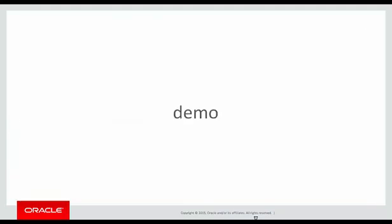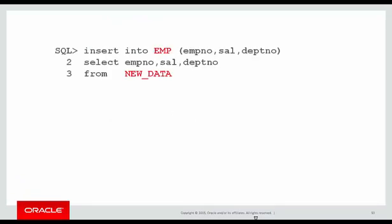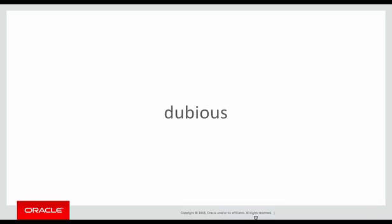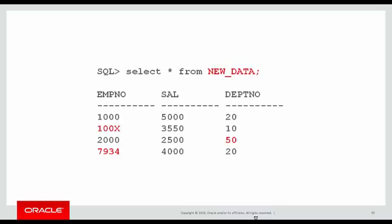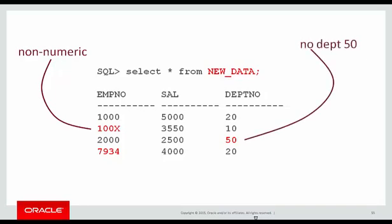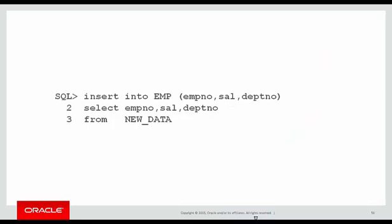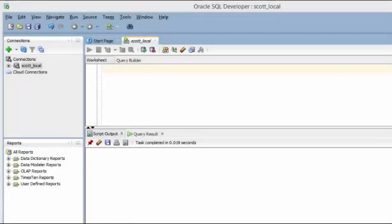So let's see it in action. I'm going to insert some rows into my EMP table using some data that's been loaded into a table called NEW_DATA. But I'm pretty dubious about the quality of the data in that table, and with good reason. A quick query on the table shows a non-numeric employee number, a reference to department number 50 which doesn't exist in my organization, and an attempt to load employee 7934 who already exists in my table. So here is my insert statement — let's see that demo in action on a real database.